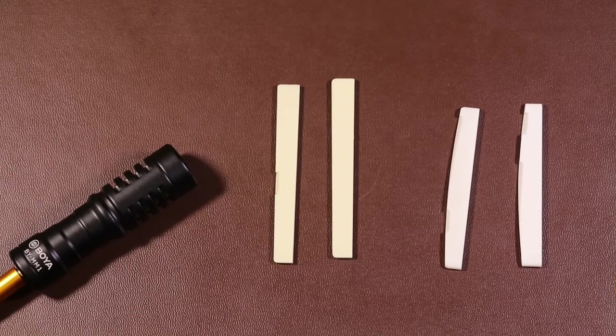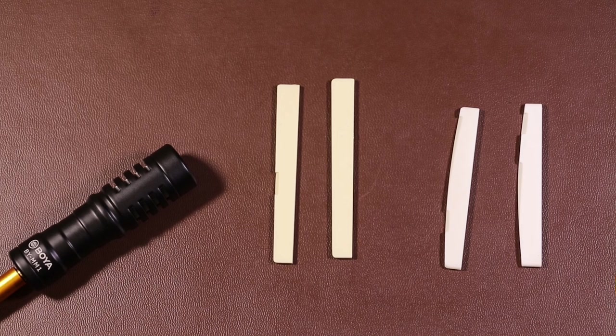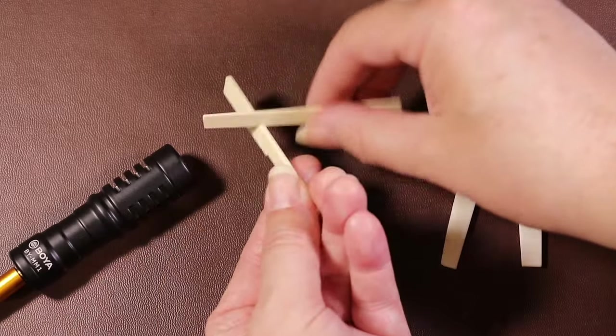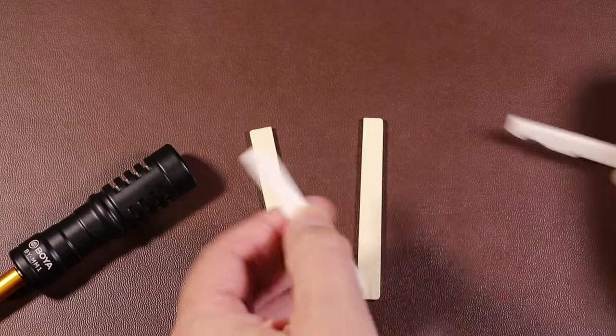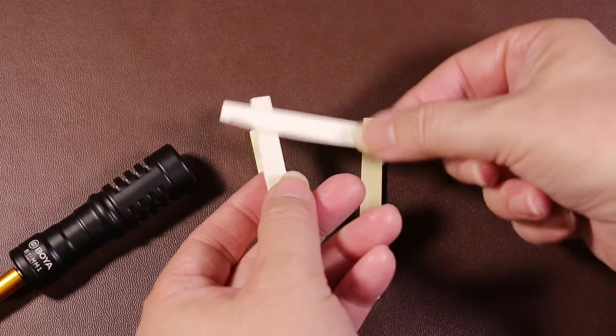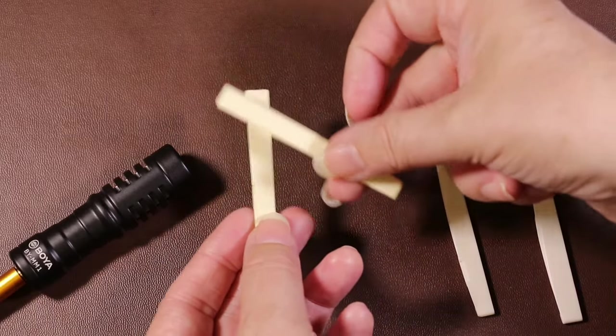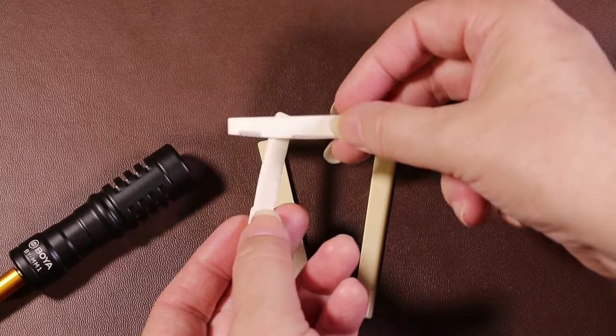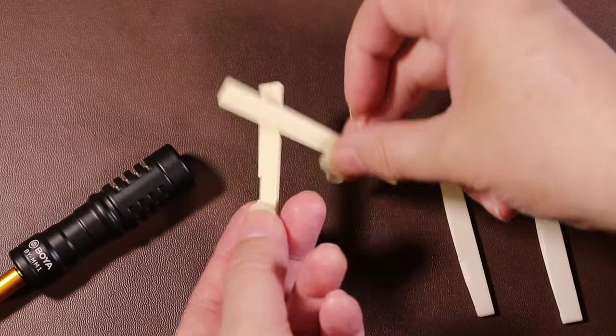To try and demonstrate the difference between the plastic and the bone, I've got two bone saddles and two plastic saddles. The plastic ones are slightly longer because they're from a nylon strung guitar. And I'll just tap them together a few times so you can hear the difference in sound they produce.